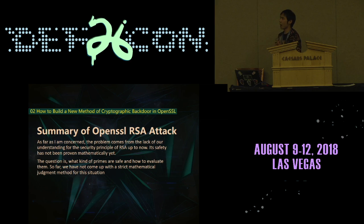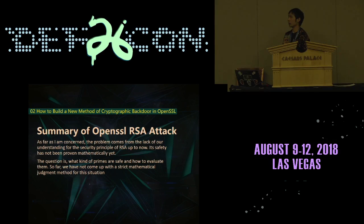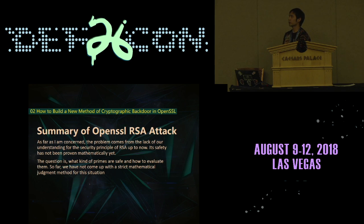Now here is our small conclusion. As far as I'm concerned, the problem comes from the lack of our understanding of the security principles of RSA. Its safety has not been proven mathematically yet. The question is: what kind of primes are safer and how do we evaluate them? We have not come up with a straightforward mathematical judgment for this situation.